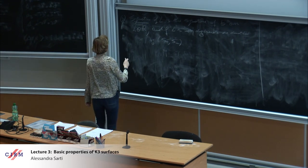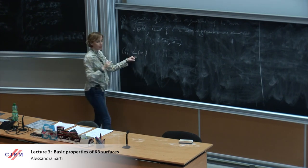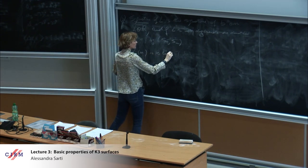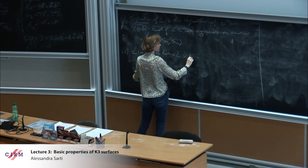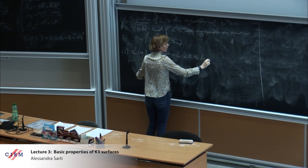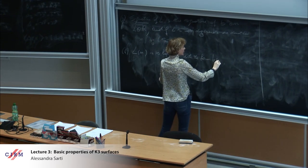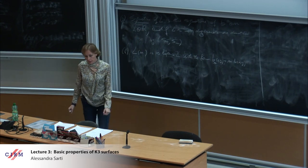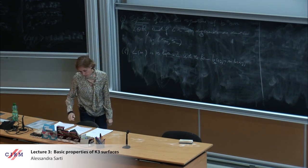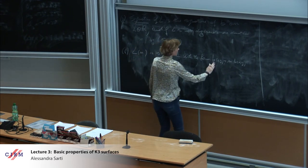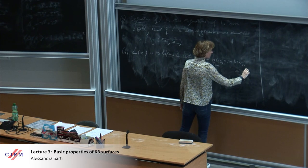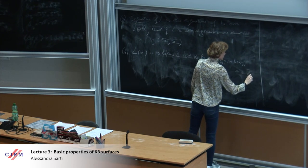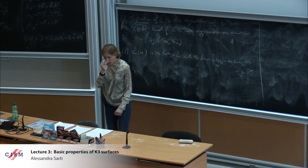The notation: if I write L(M), this is the lattice L with the form B_M(x,y) = M · B(x,y), so I just multiply the form by a constant M, which is a non-zero integer. Then we have the notion of isometry.